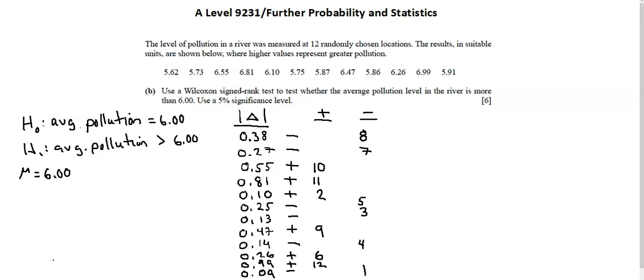So notice in the positive column, I have the first three values: 10, 11, and 2. If I look to the left, I see those three have positive. That's why I've put them in the positive column.